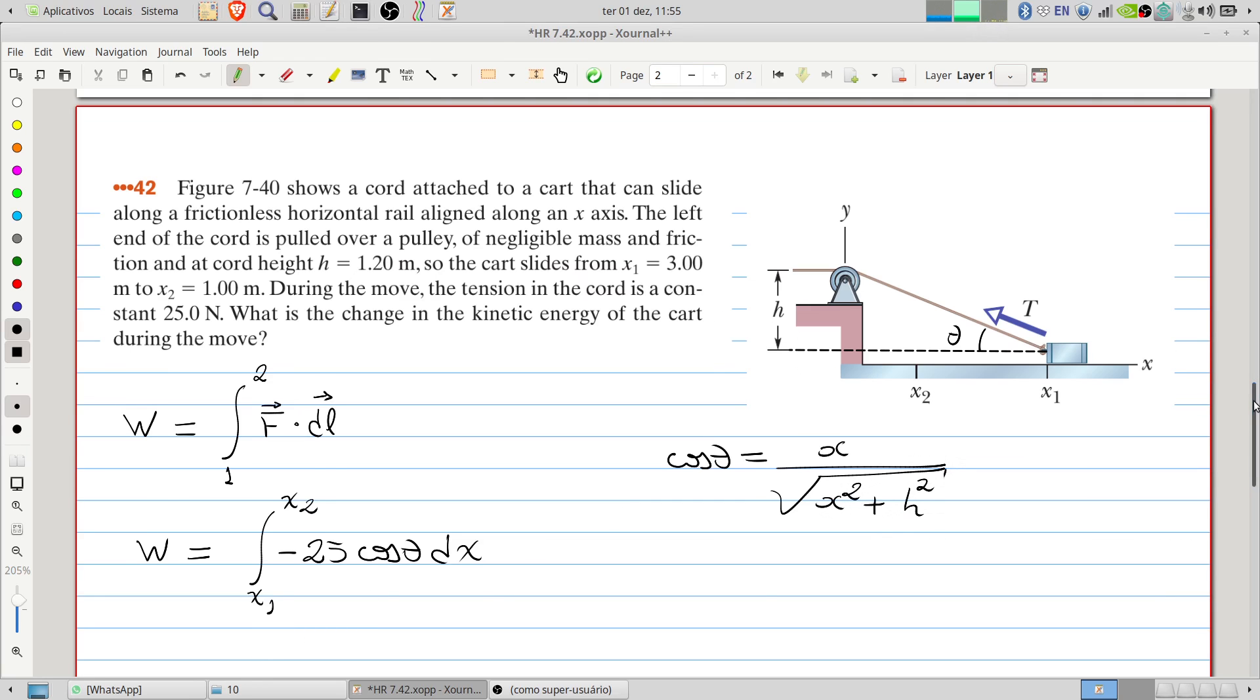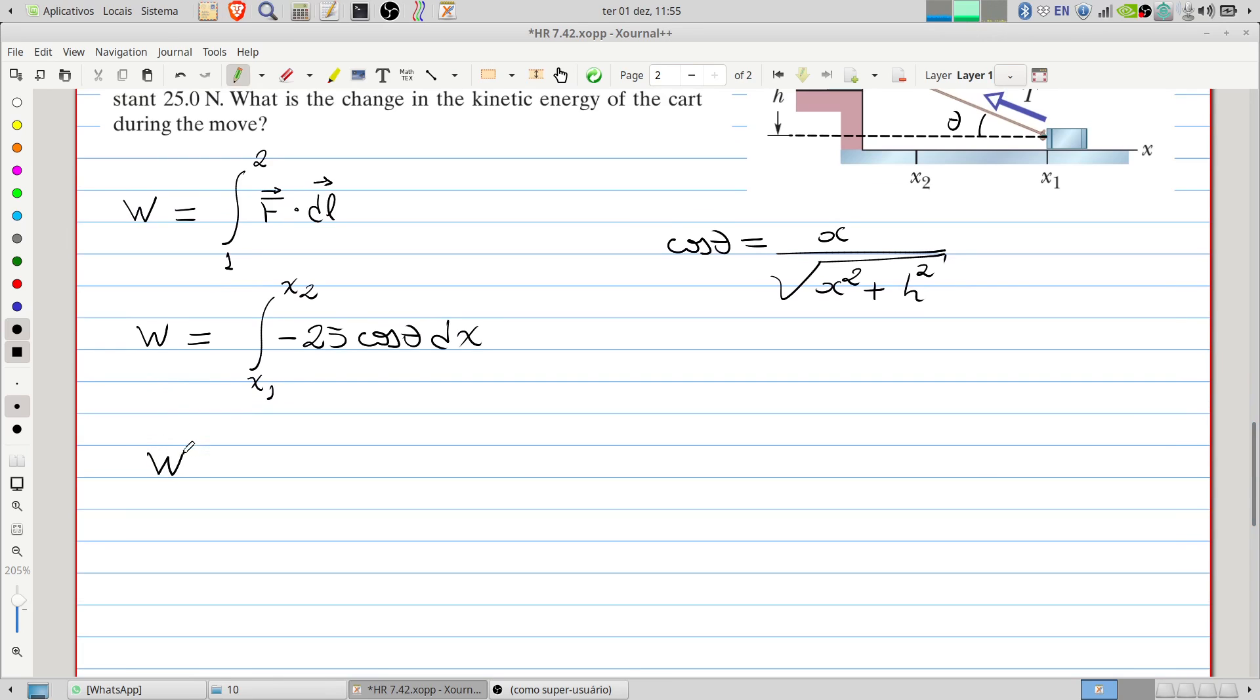Therefore the work will be minus 25 times the integral of x divided by square root of x squared plus h squared, integrating in the x variable from x1 to x2.